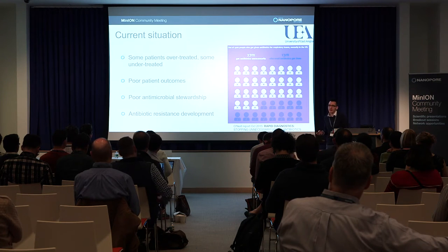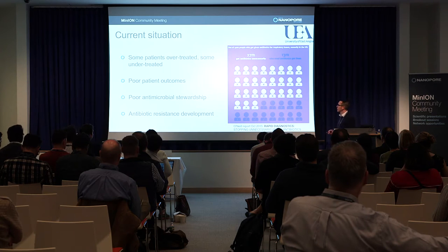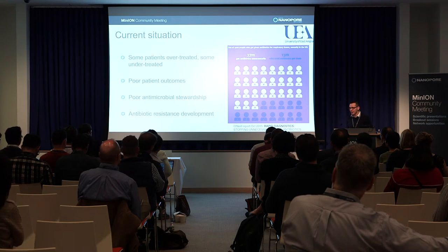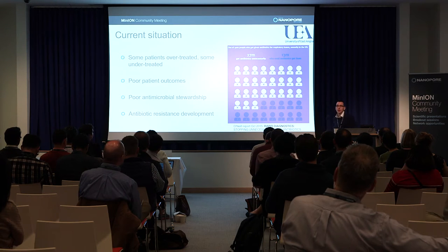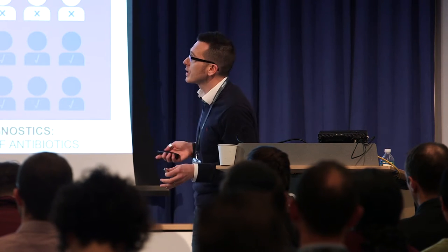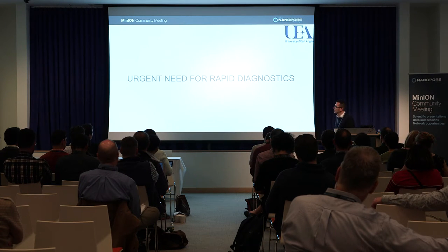These antibiotics will kill all bacteria — or as many as possible — and that's not ideal for a number of reasons. Some patients get antibiotics when they shouldn't at all — maybe they have a viral infection, or no infection at all. Some patients are over-treated, given a very potent antibiotic when they don't need it. Some patients are under-treated, meaning the drug chosen won't work because the strain infecting them is resistant. This all leads to poor patient outcomes, poor antimicrobial stewardship, and eventually the development of antibiotic resistance.